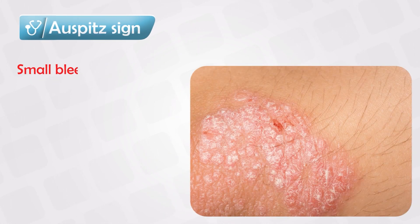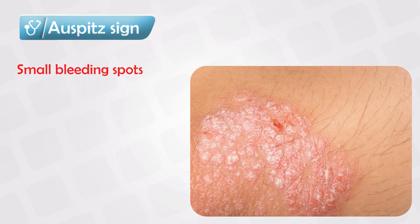If we use the dermatoscope, we will see pinpoint bleeding spots, and these are known as the Auspitz sign. These are small blood vessels that reach the upper epidermal layer.